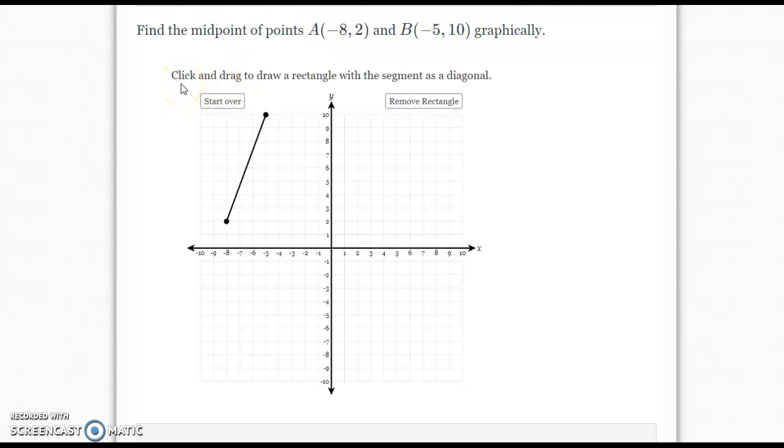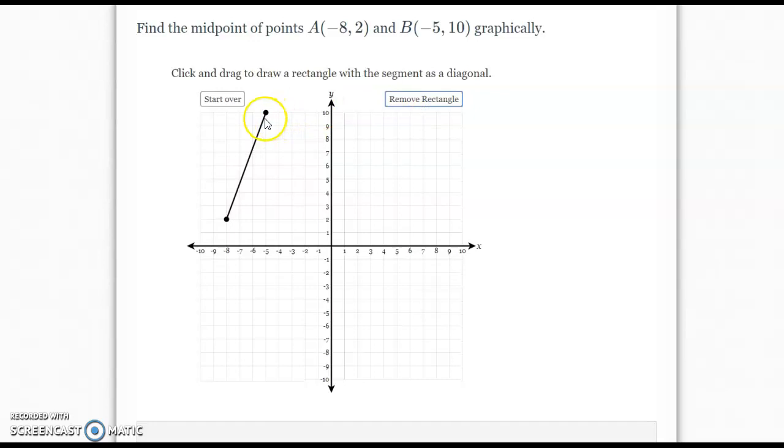And now it says, click and drag to draw a rectangle with the segment as a diagonal. So notice right here, I'm going to have to draw a rectangle that has this as a diagonal. So I'm going to click this corner, and I'm going to hold, and I'm going to draw a rectangle around it like this. Let's say you do that wrong. Just click remove rectangle.